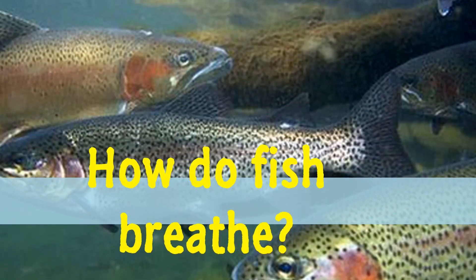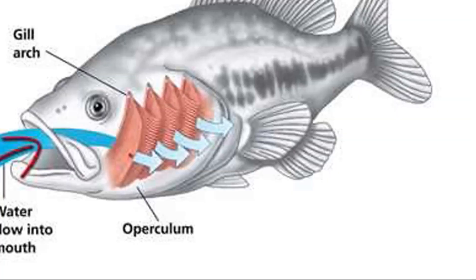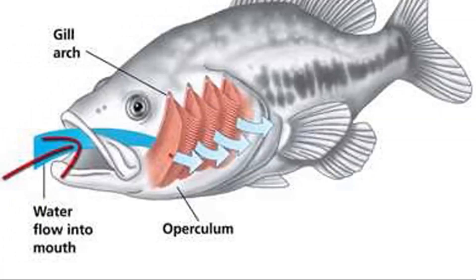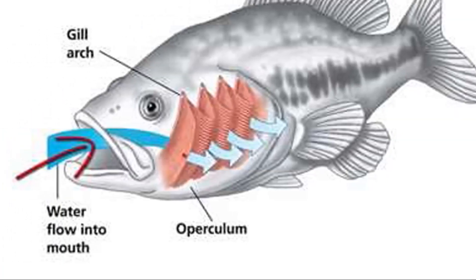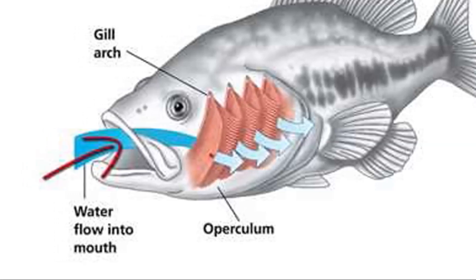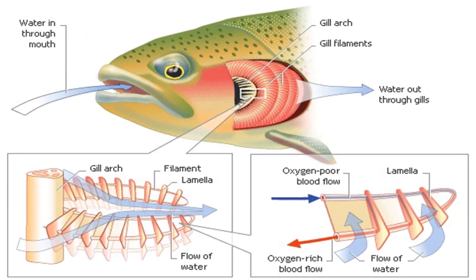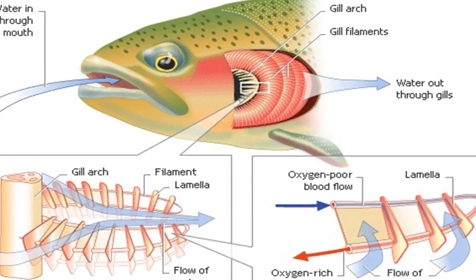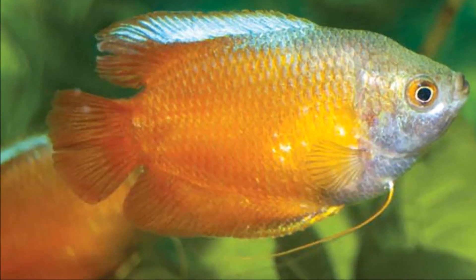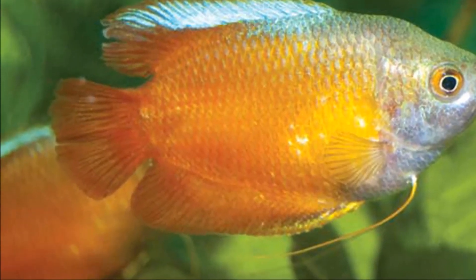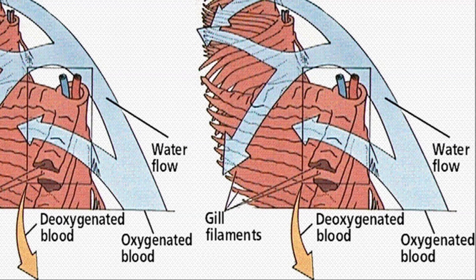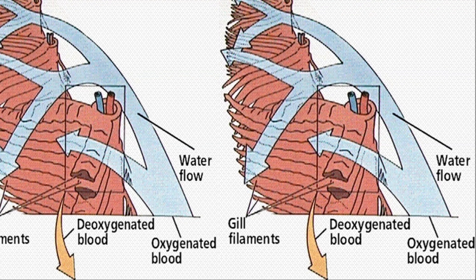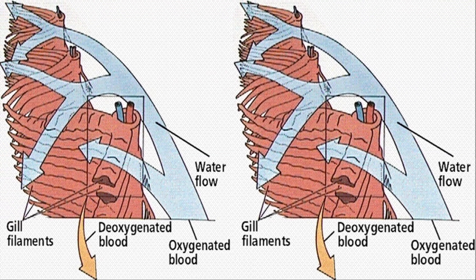How do fish breathe? Most fish breathe with gills, a structure on either side of the body that contain features known as filaments and lamellae. Water, which contains oxygen, flows in through the fish's open mouth and then out across the gills.